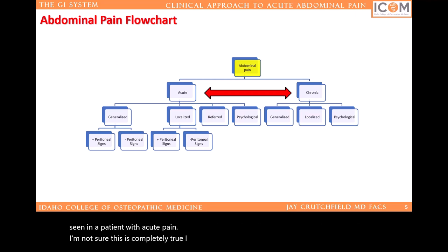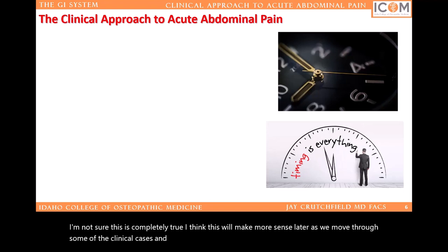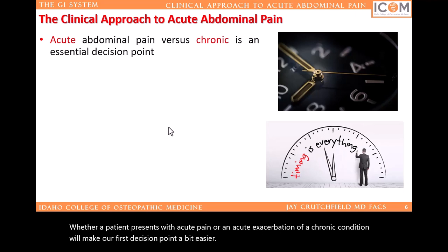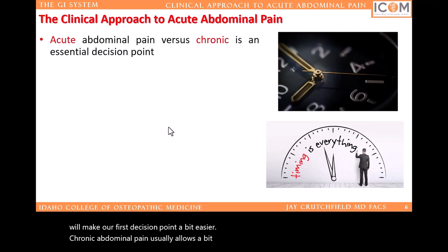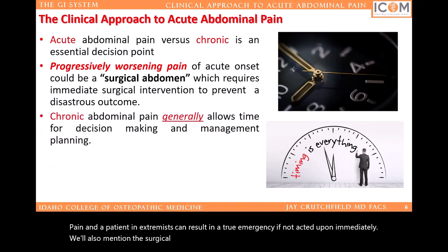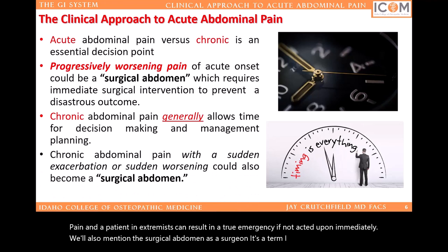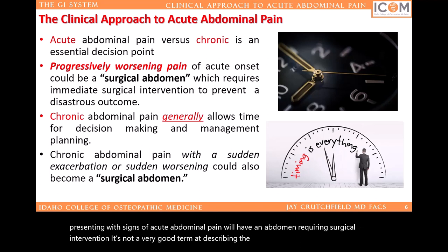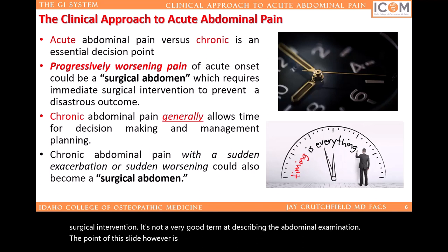I think this will make more sense later as we move through some of the clinical cases and examples. Whether a patient presents with acute pain or an acute exacerbation of a chronic condition will make our first decision point a bit easier. Chronic abdominal pain usually allows a bit more time for a more complete workup. Acute pain and a patient in extremis can result in a true emergency if not acted upon immediately. We'll also mention the surgical abdomen, but as a surgeon it's a term I loathed. Not every patient presenting with signs of acute abdominal pain will have an abdomen requiring surgical intervention. Acute pain can be urgent.